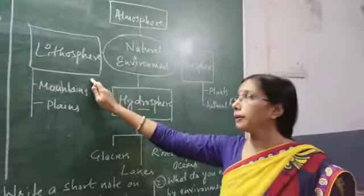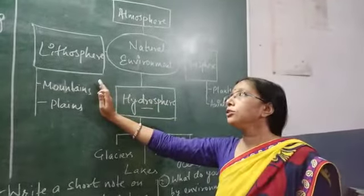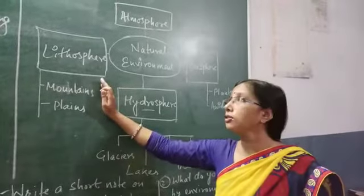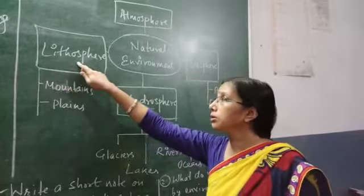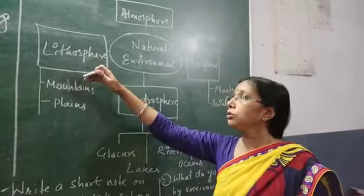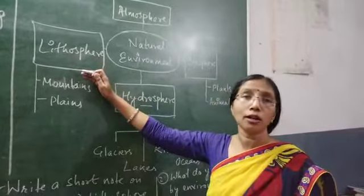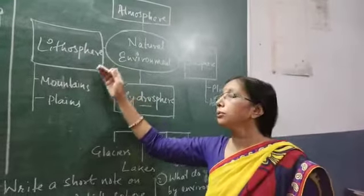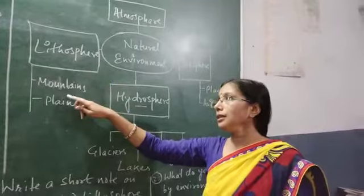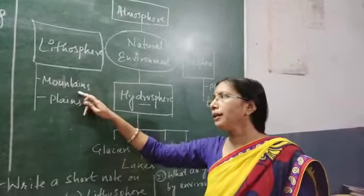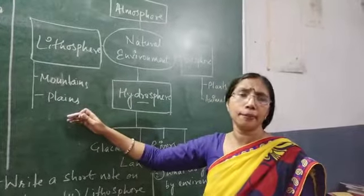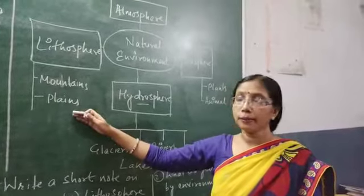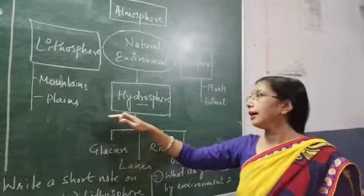Let us explain what the lithosphere is. Lithosphere means the sphere made from rocks. The sphere made from rock and solid material is called the lithosphere. Examples include mountains, plains, deserts, and plateaus. These are all part of the lithosphere.